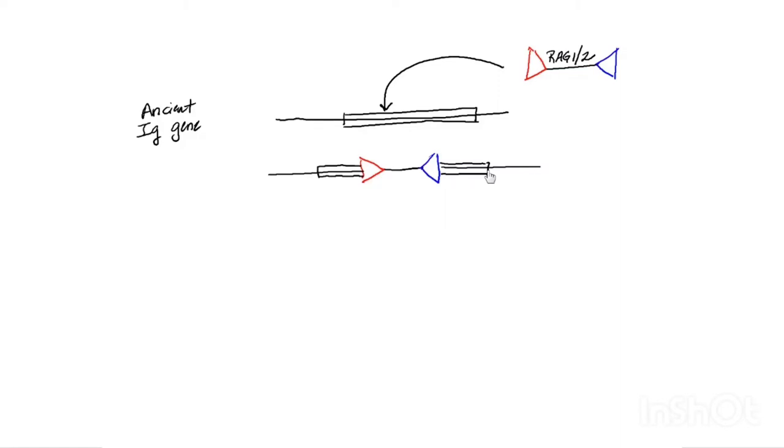And it could hop in a second time. And we'll draw in the mobile element hopping in the second time. Imagine that the same mobile element is now reversed so the red and blue, it's turned upside down. Here it is. And it's turned backwards. Because it's going to happen to hop in to this ancient immunoglobulin gene. It just happens to be right next door. This will be the second hopping event.